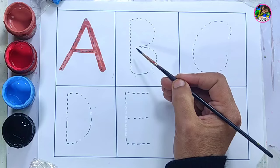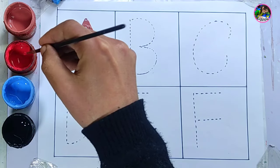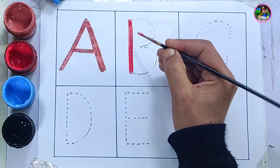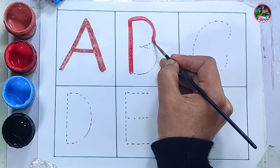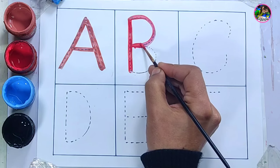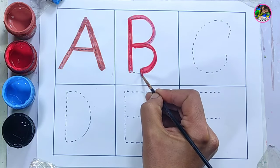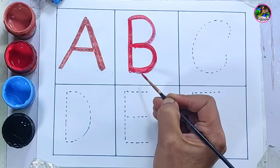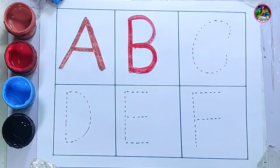Next is letter B. Red color, letter B. This is letter B. B is for ball. Ball kehte hai gend ko. What is it called, children? Gend ko. B is for ball.